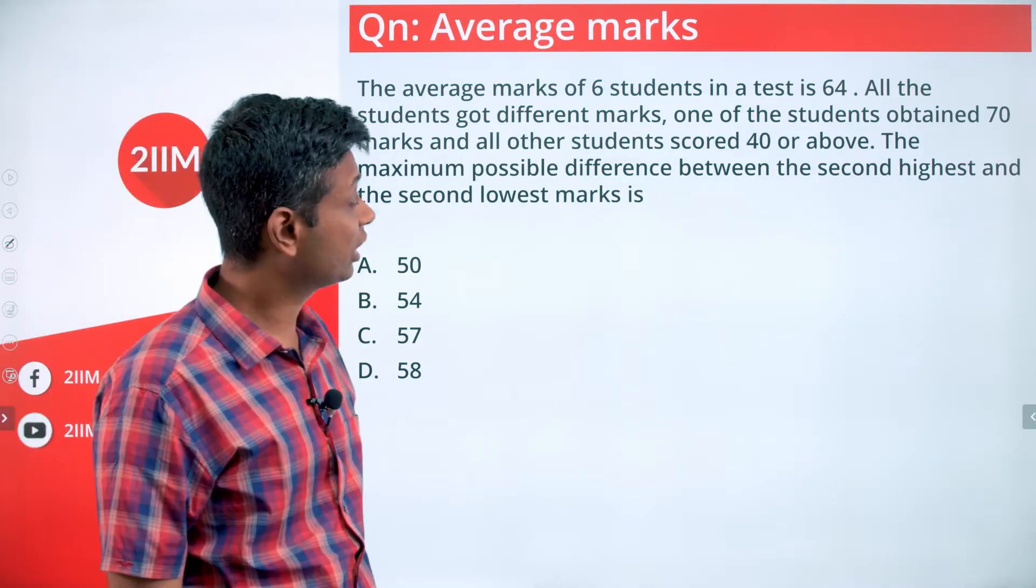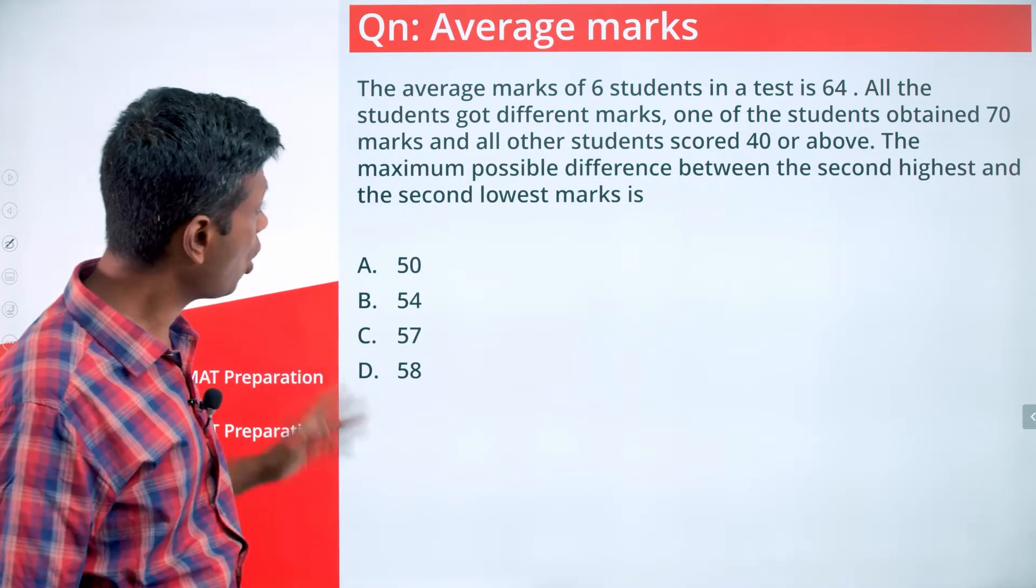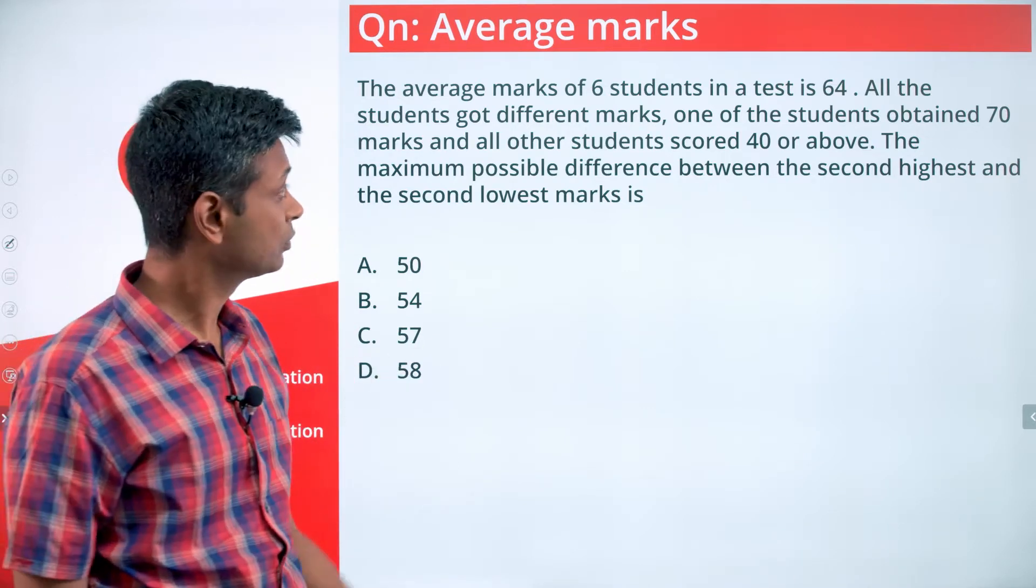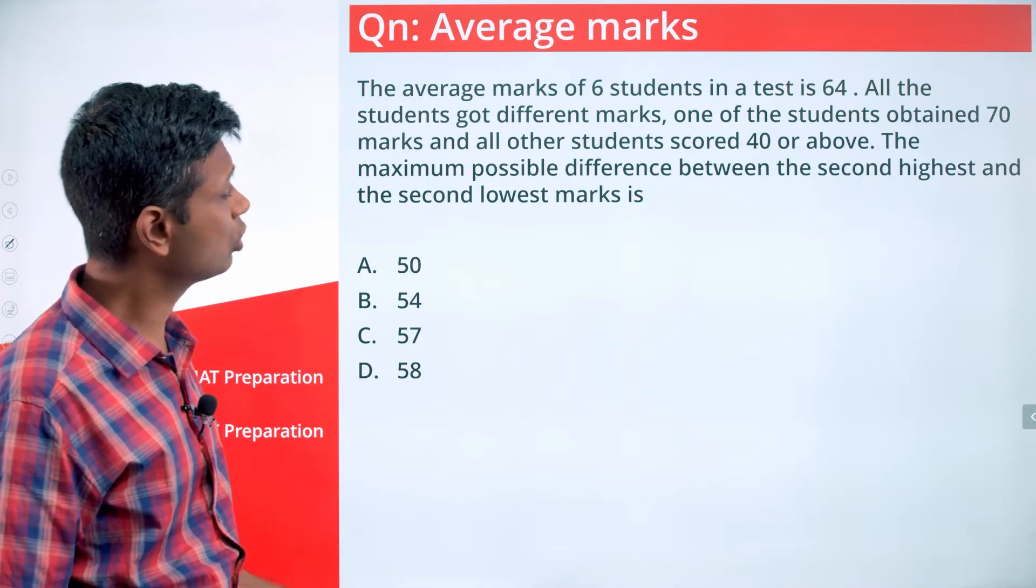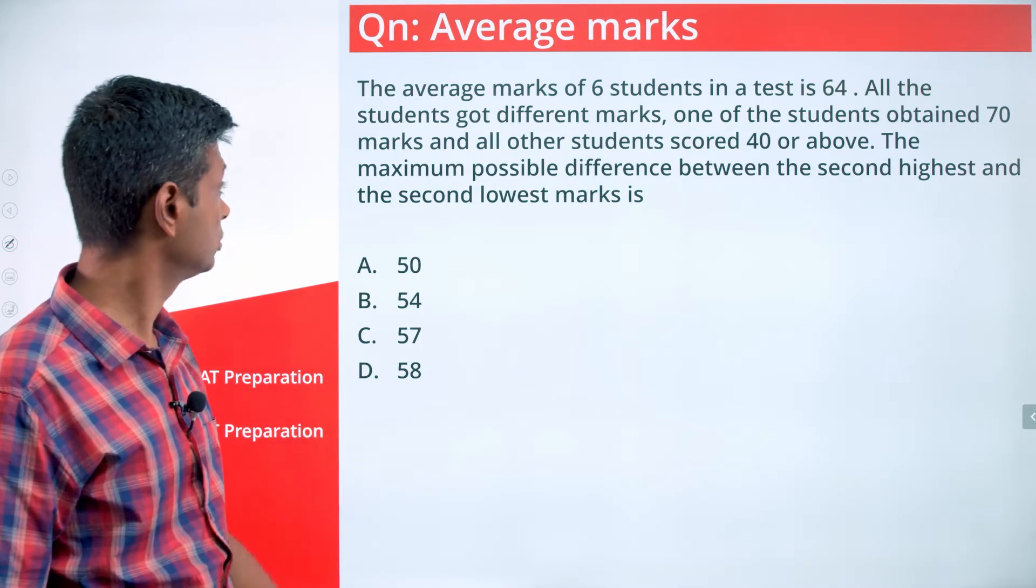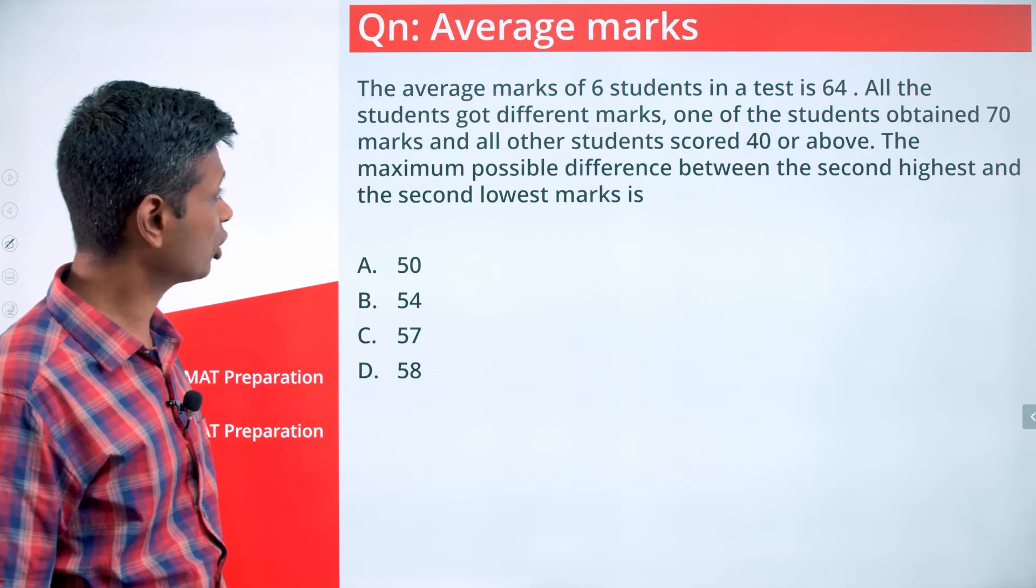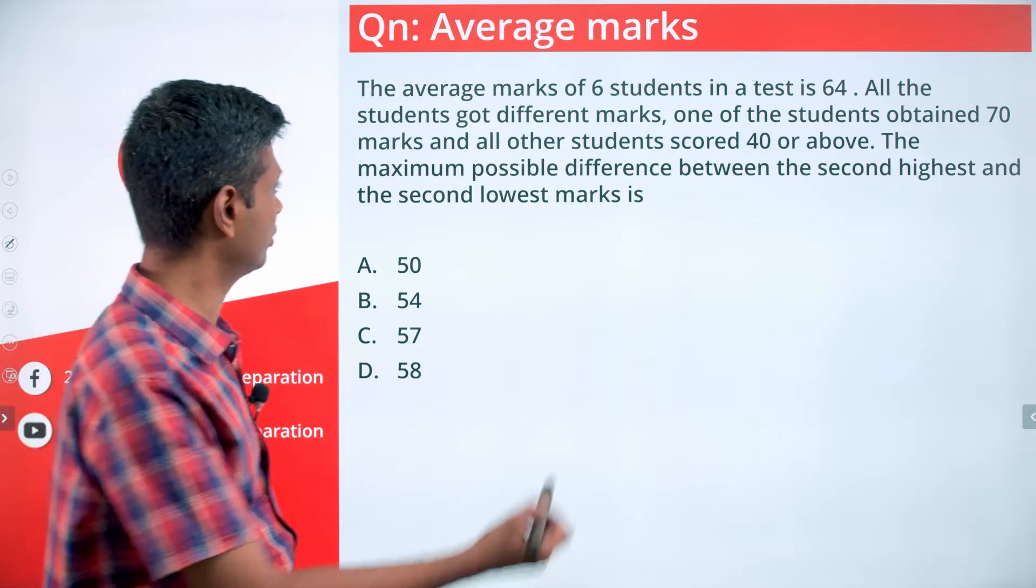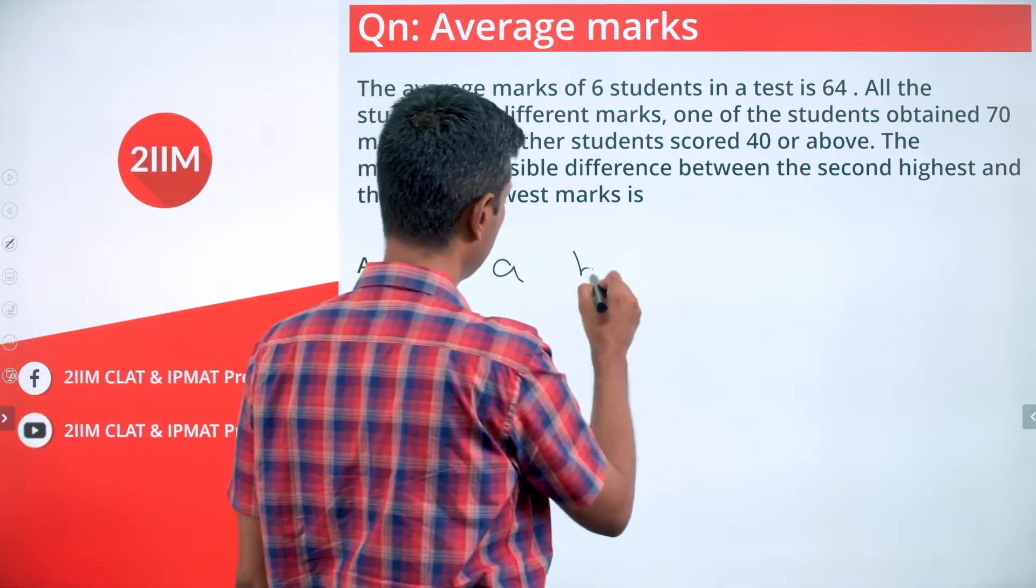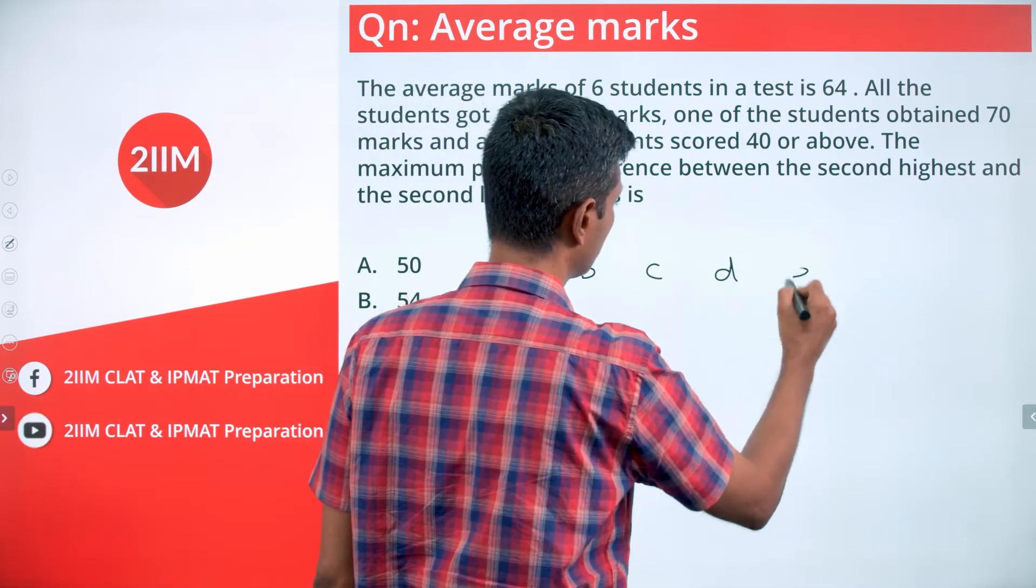The average marks of six students in a test is 64. All the students got different marks. One of the students obtained 70 and all other students scored 40 or above. The maximum possible difference between the second highest and the second lowest mark. Lovely question. So six different things: a, b, c, d, e, f.